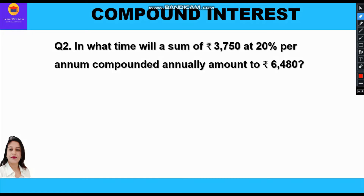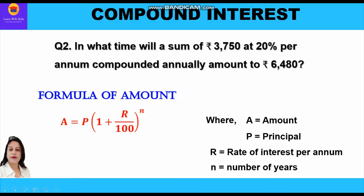This question is also similar to the previous one. Here they are asking in what time will the sum of rupees 3750 — sum means principal — at 20% per annum, that is our rate of interest, amount to rupees 6480, that is our amount. Three quantities are given: principal, amount, and rate of interest, and we have to find the fourth quantity — the time period — using the formula A = P(1 + r/100)^n.